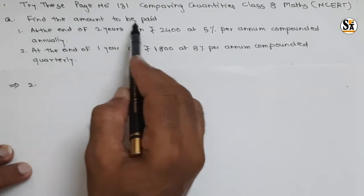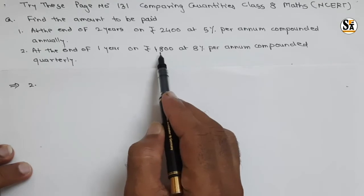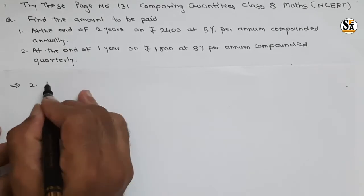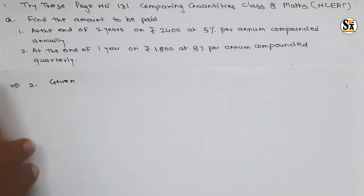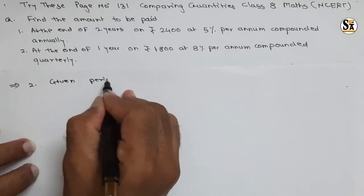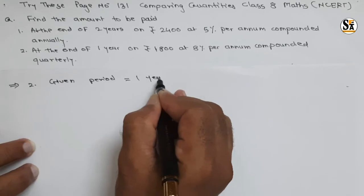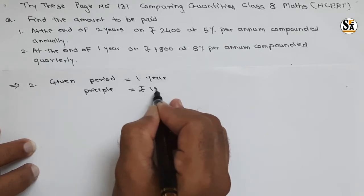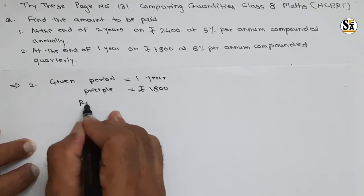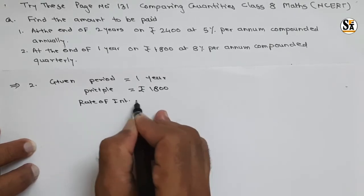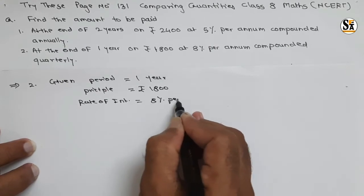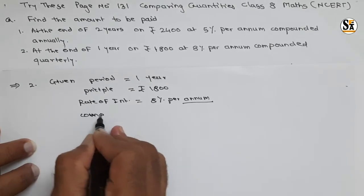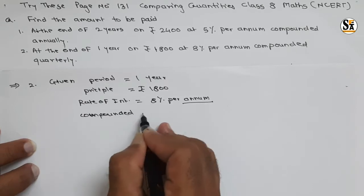Now see the second part: find the amount to be paid at the end of one year on rupees 1800 at eight percent per annum compounded quarterly. The term 'compounded quarterly' is important. Given: total period is one year, principal amount is rupees 1800, rate of interest is eight percent per annum, and compounded quarterly.